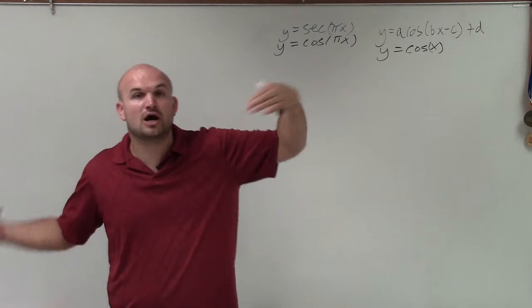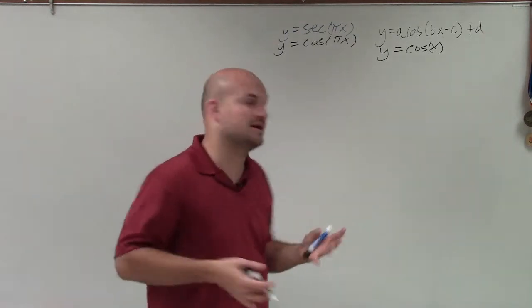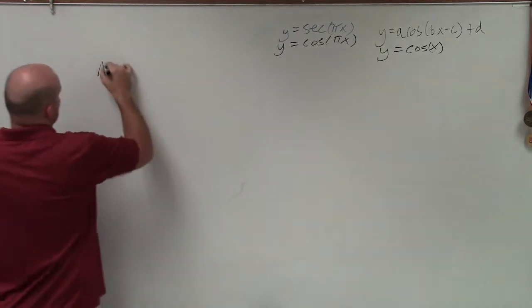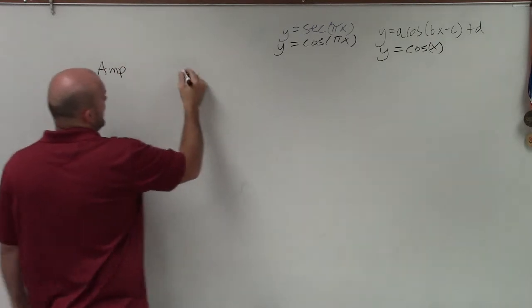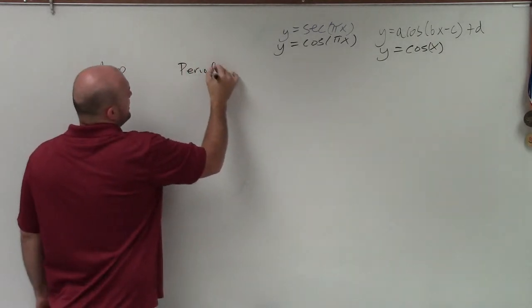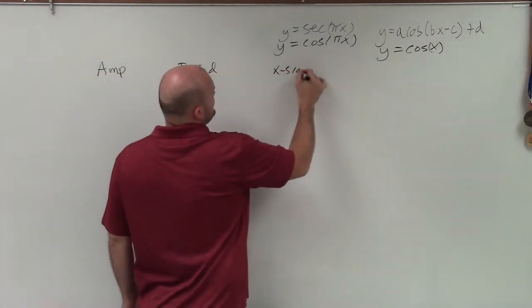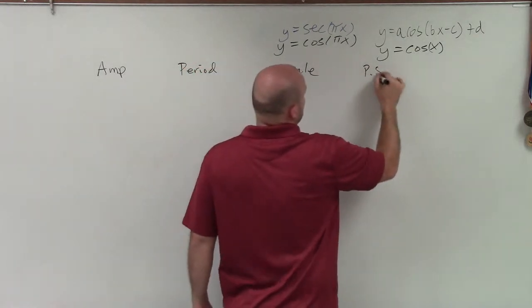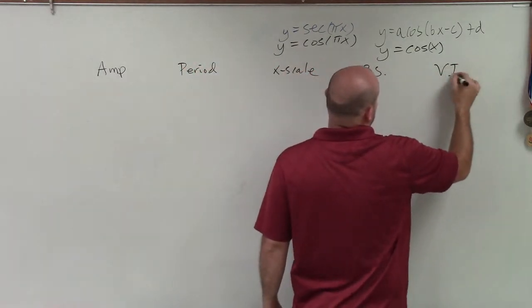Now, b is going to represent our period. It's going to affect our period. So let's go through all the information. We need to determine our amplitude, our period, our x scale, our phase shift, and our vertical transformation.